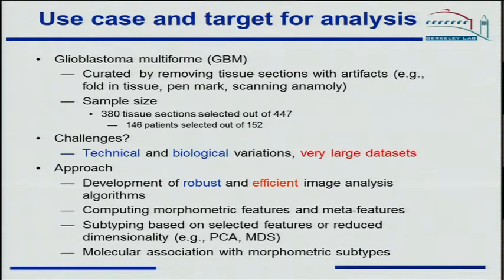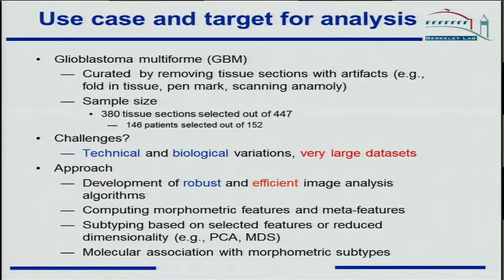The next step is to link this information with the molecular data — the transcriptome. As a specific example, we start with glioblastoma, roughly 146 patients and 380 tissue sections. It takes about a week of computing time to process these images on a cluster of several hundred nodes. The challenges include technical and biological variations, since every tissue section has been prepared by a different laboratory, and the data sets are very large.